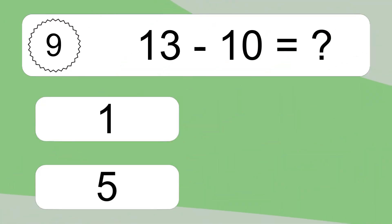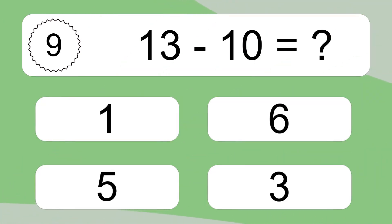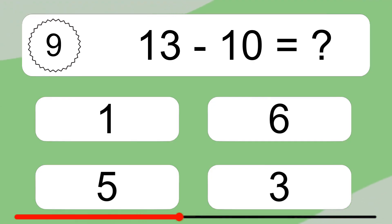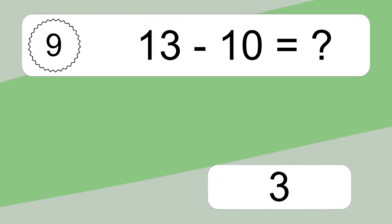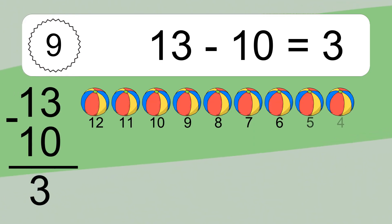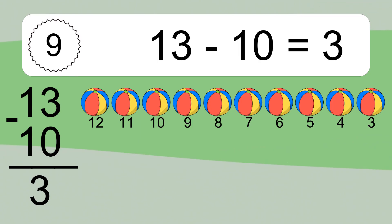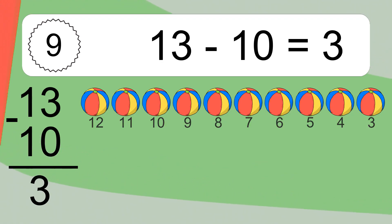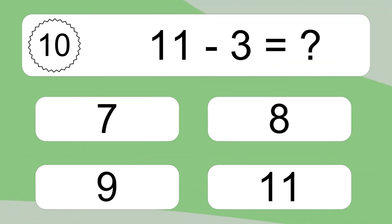13 minus 10 equals what? 13 minus 10 equals 3. Let's count it. 12, 11, 10, 9, 8, 7, 6, 5, 4, 3.